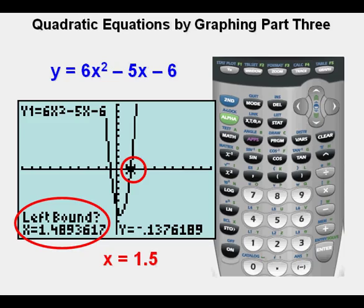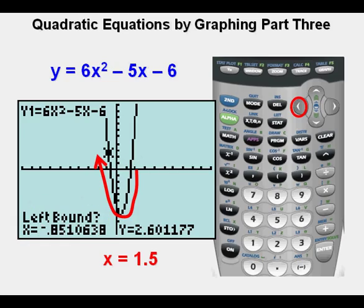The cursor is very close to the x-intercept already found and the left bound is being asked for. He arrows several keystrokes to the left and above the solution on the left. He presses enter.